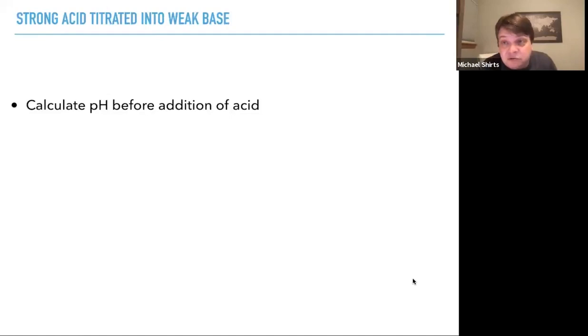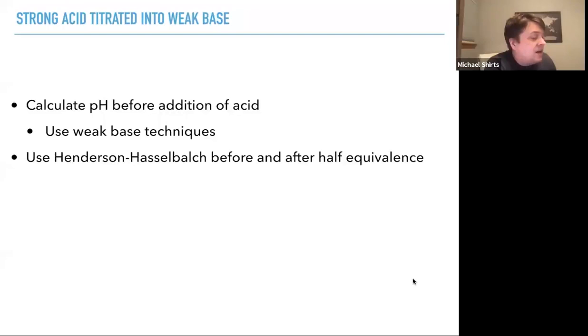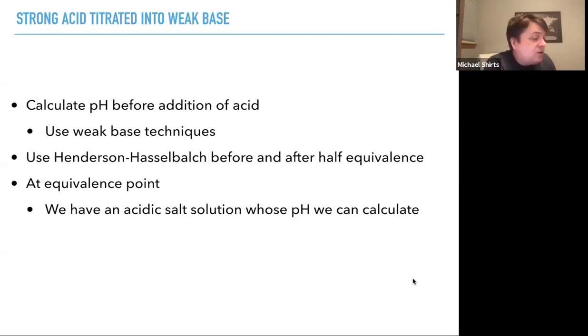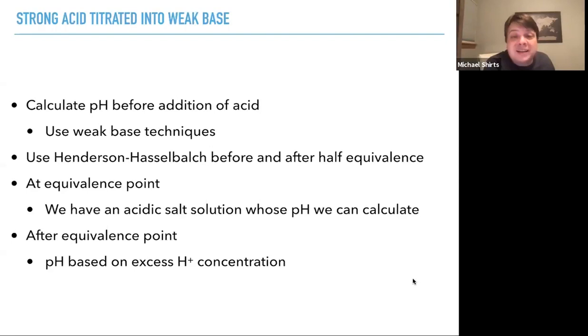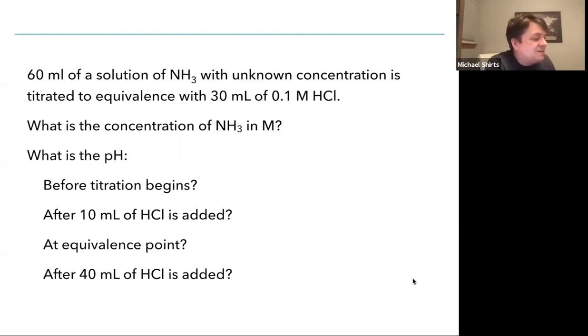We calculate the pH before the addition of the acid using weak base techniques at the beginning. Then we can use Henderson-Hasselbalch before and after the half equivalence point. At the equivalence point, we have an acidic salt solution whose pH we can calculate. After the equivalence point, the pH is based on excess H⁺ concentration.